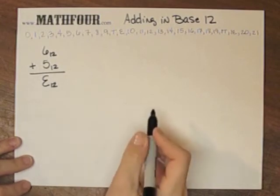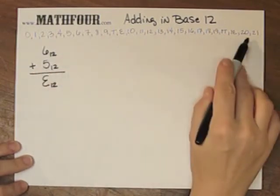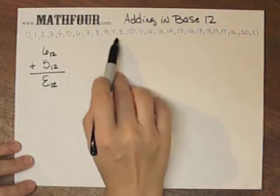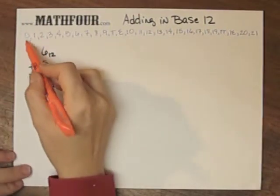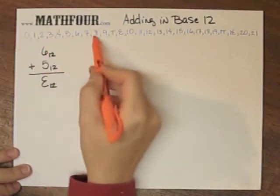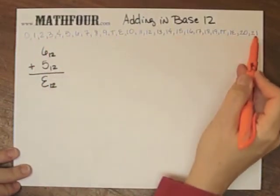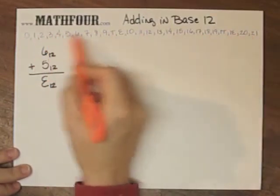So 6 plus 5 is E. I have these numbers listed here at the top which are kind of small in the video, I'm sure. They're just the digits, I'm sorry, the digits and then the continuation of count on up to 21 and these are all in base 12.